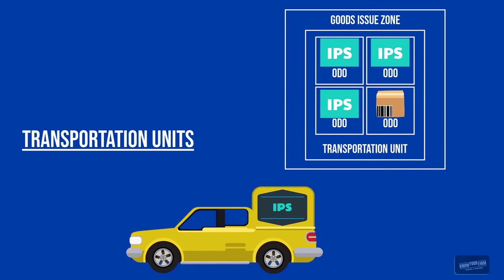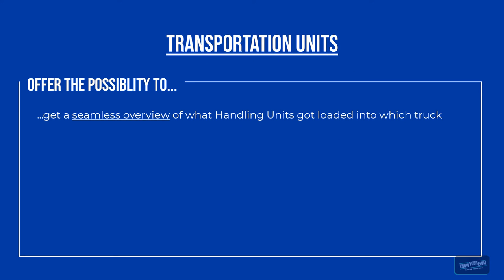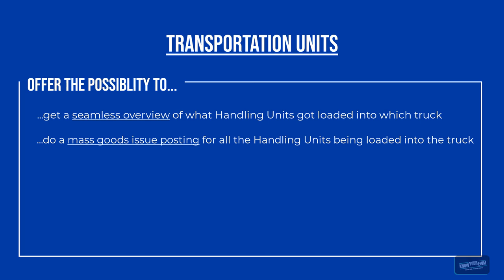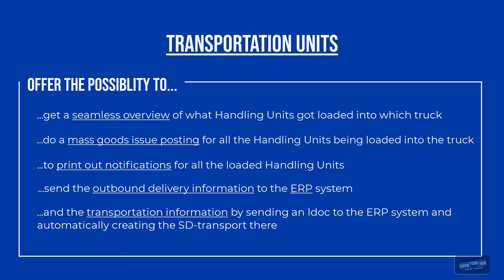Here the beauty of transportation units comes into play. They offer you a seamless overview over what handling units got loaded into which truck. They offer the possibility to do a mass goods issue posting for all the handling units being loaded into a truck. They further provide the possibility to print out notifications for all the loaded handling units, and they also create the possibility to not only send the outbound delivery information to the ERP system, but also the transportation information by sending an IDOC to the ERP system and automatically creating an SD transport.